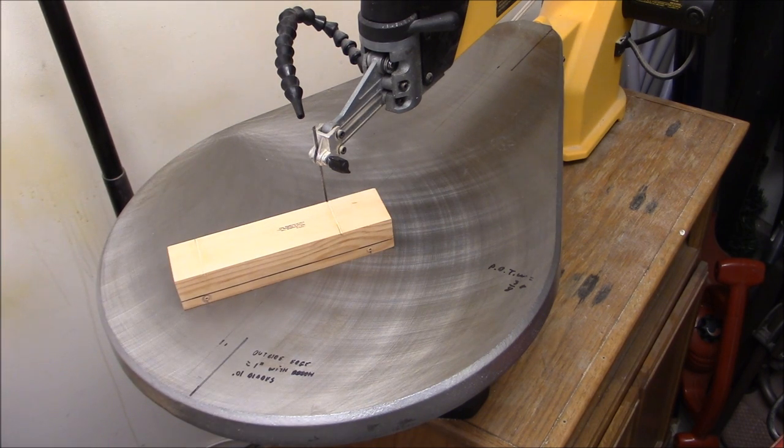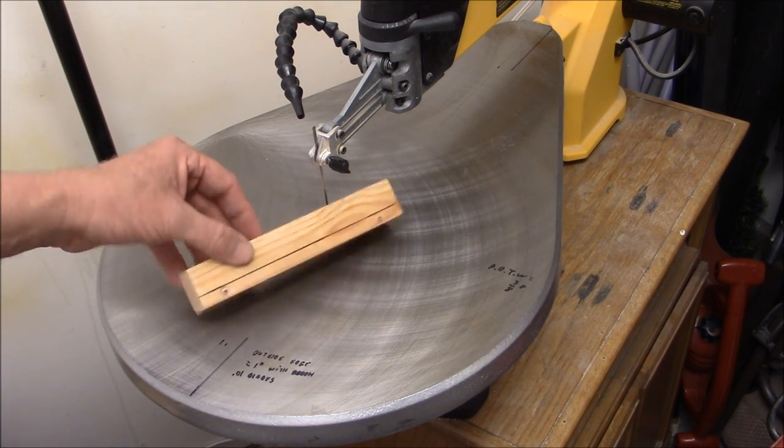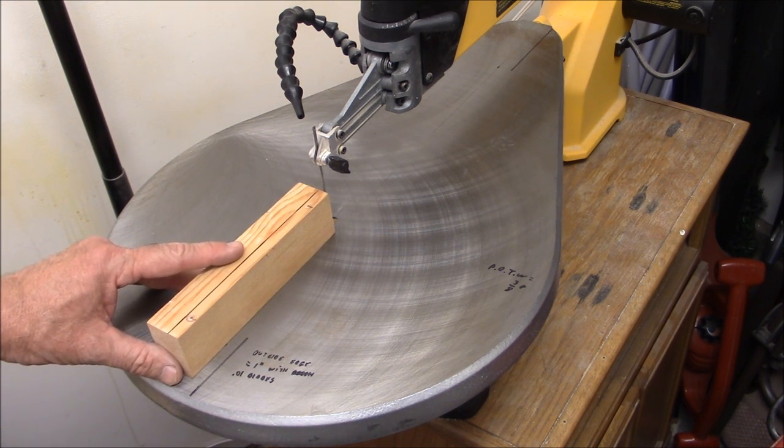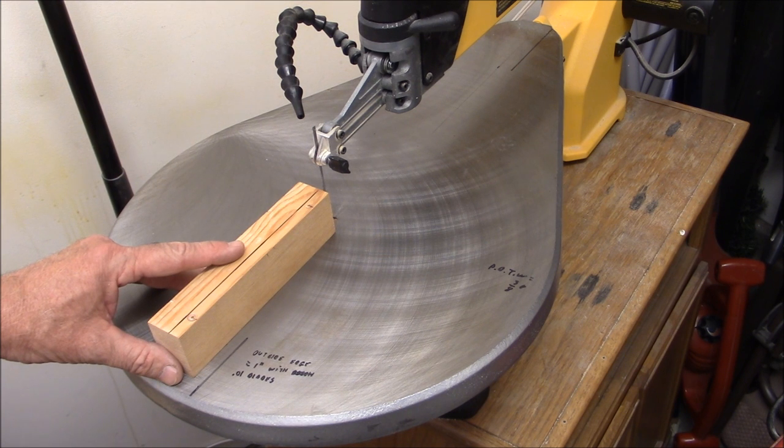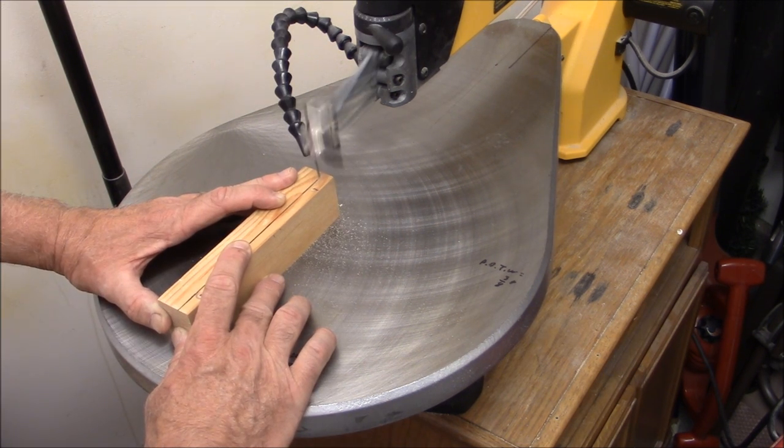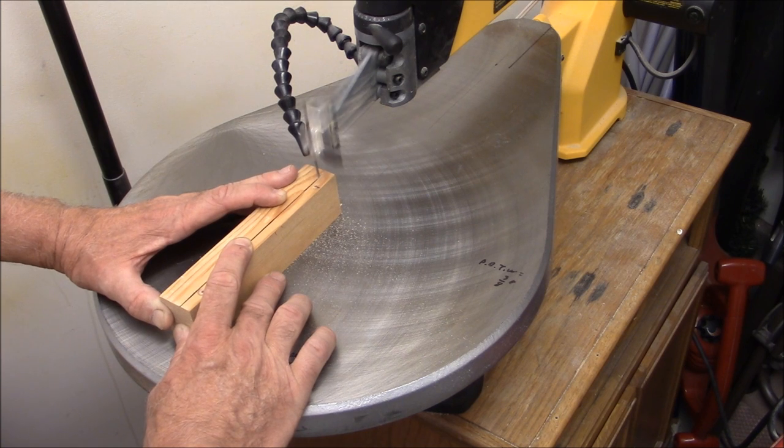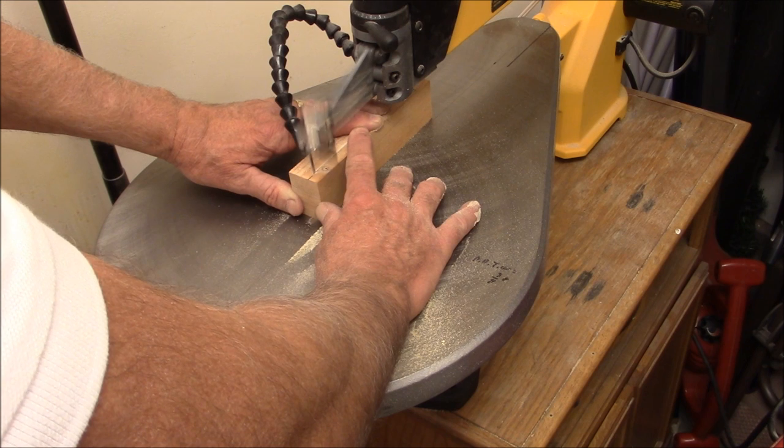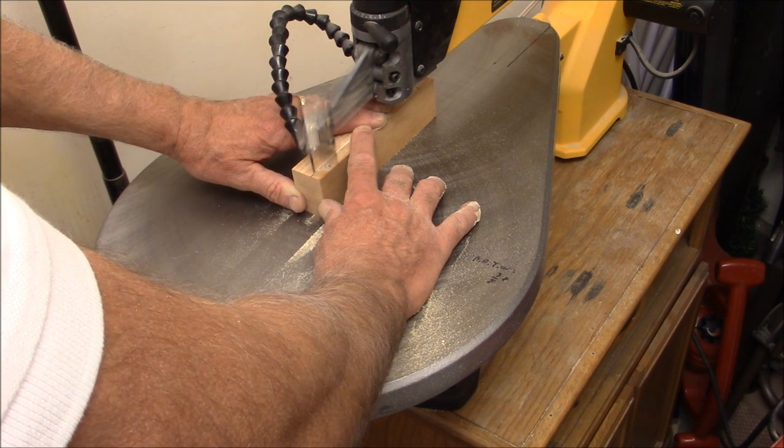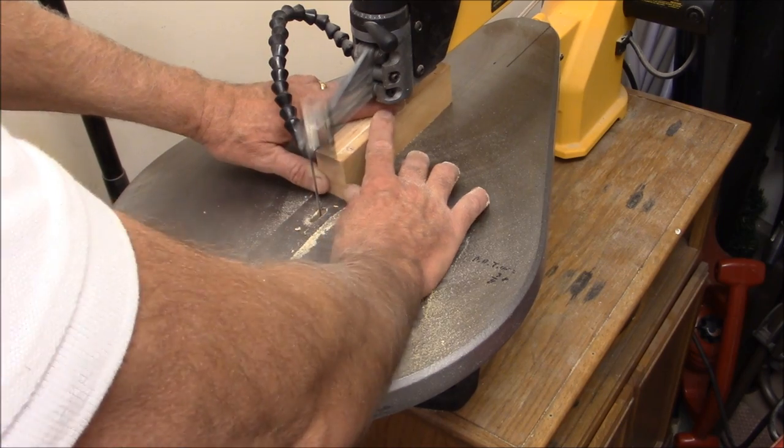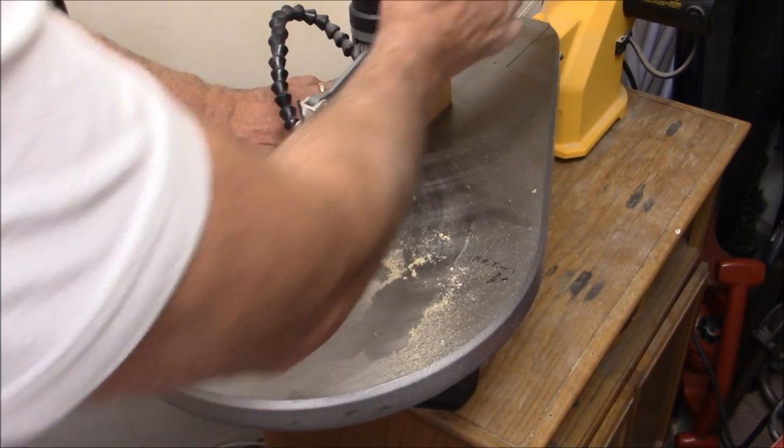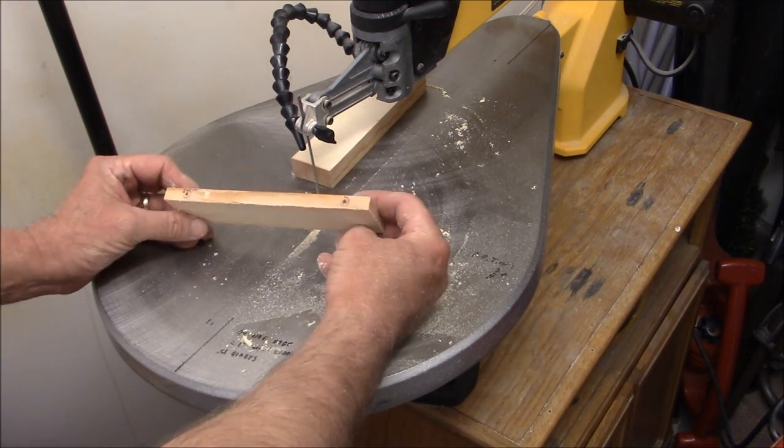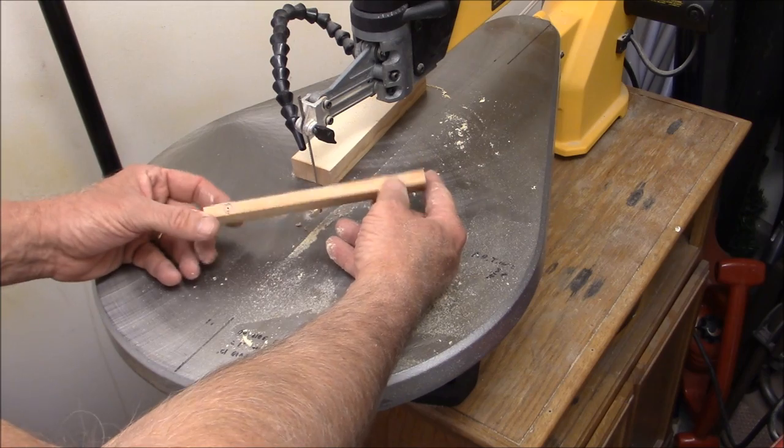I'd like to use a band saw to cut this out because it's more accurate and faster. Unfortunately I don't have one. So I use a scroll saw with a coarse blade which does pretty good. And there it is. A little rough but some sanding will take care of that.